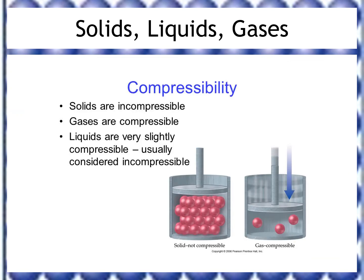Because solid particles are so close together, solids are incompressible — it's very difficult to compress anything solid. Gases, on the other hand, are completely compressible because their particles are so far apart; compressing them just pushes the particles closer together. Liquids are also incompressible because, like solids, their particles are so close together. A common mistake when drawing liquid diagrams is showing particles further apart than they should be — they are still pressing against each other, just spaced enough to change places.